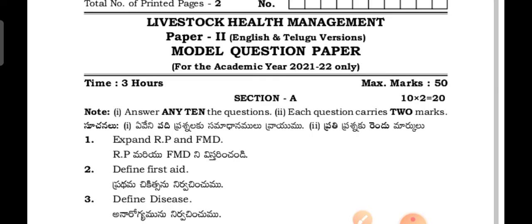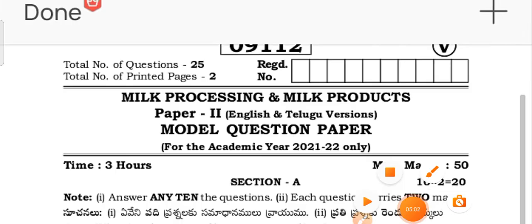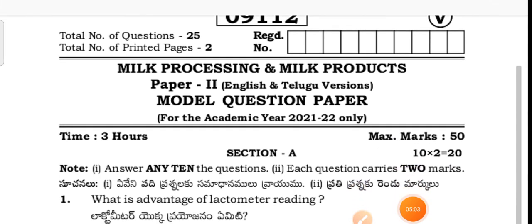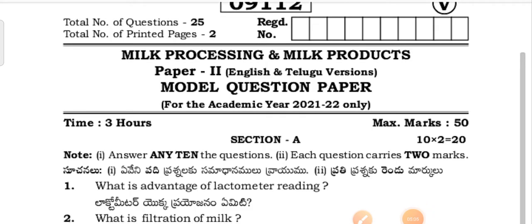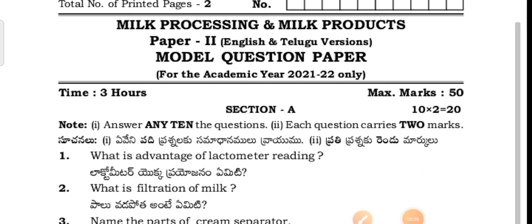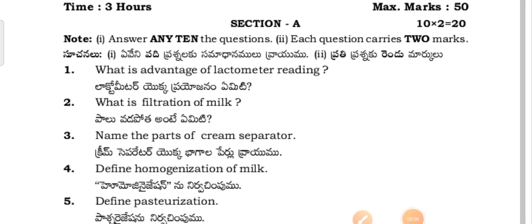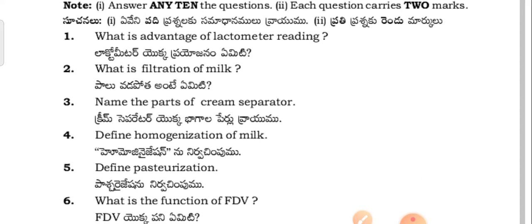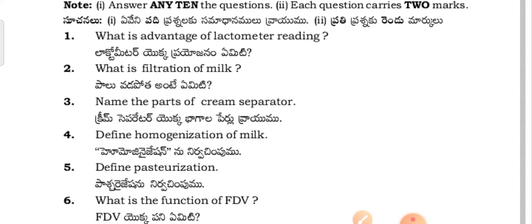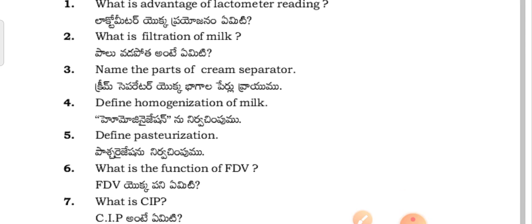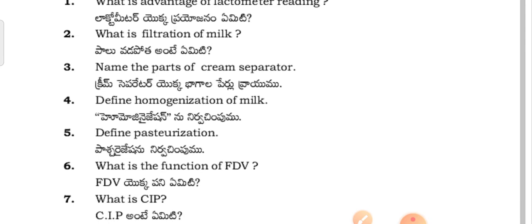This is the first paper for second year LMDT students. Now let me show the second paper for LMDT second year students. The second paper is Milk Processing and Milk Products. Section A - we have already discussed the question pattern for this academic year. What is the advantage of the lactometer reading? What is filtration of milk?